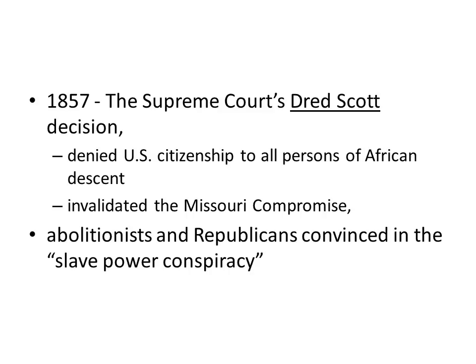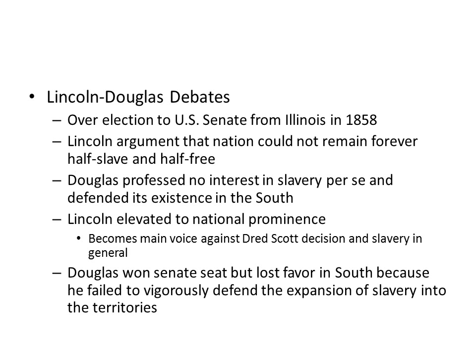Another incident that severely outraged northern abolitionists was the 1857 decision by the Supreme Court regarding Dred Scott. In this decision, the Supreme Court denied citizenship to all persons of African descent, and invalidated the Missouri Compromise in its entirety. Abolitionists and Republicans were convinced at this stage of what they called the slave power conspiracy, and that Southern Democrats were colluding to force slavery everywhere within the country.